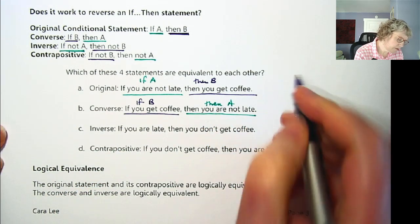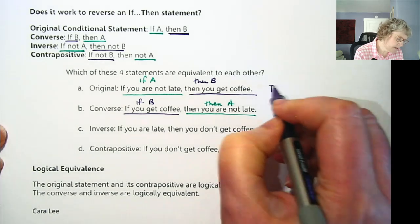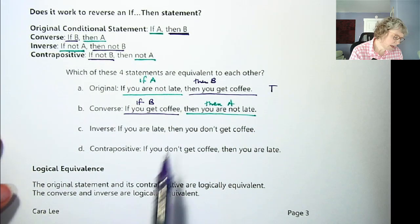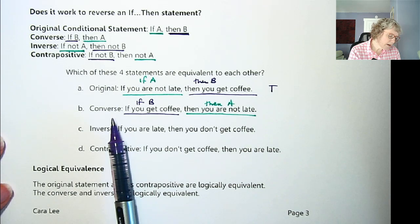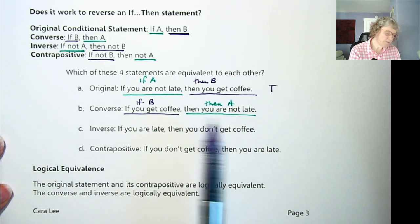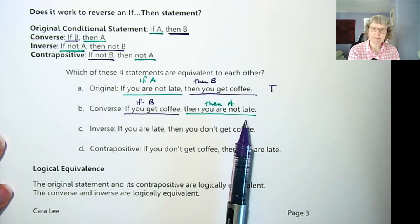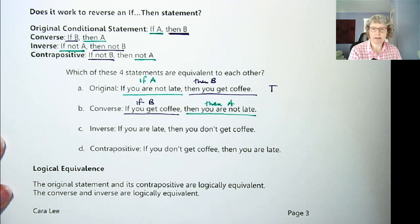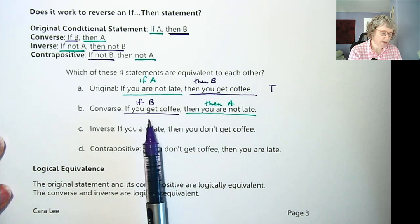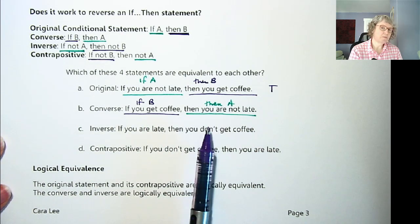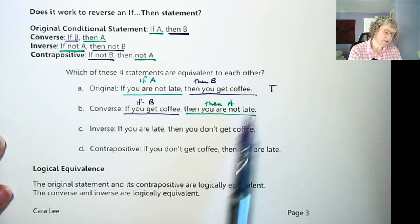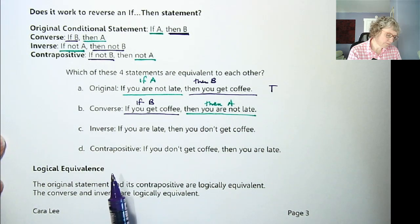Let's say the original is true: if you are not late, then you do get coffee. Now, if you get coffee, does that mean you weren't late? Not necessarily, right? Because maybe you had a different way to get coffee — maybe you brought it with you. You could have been late but showed up with coffee. So the converse doesn't necessarily have the same meaning as the original.